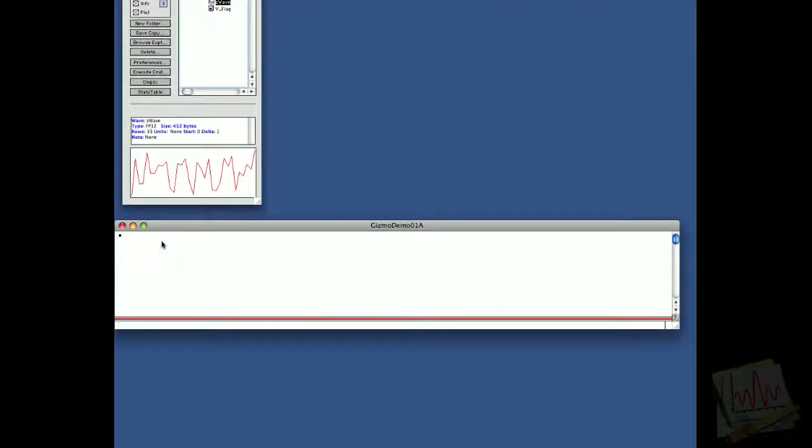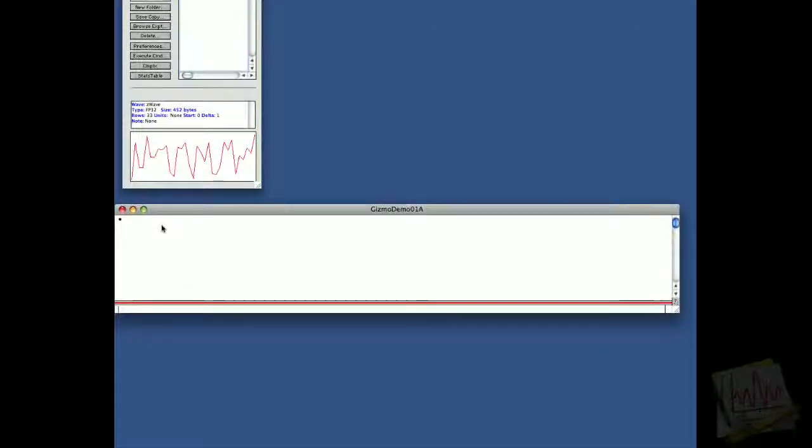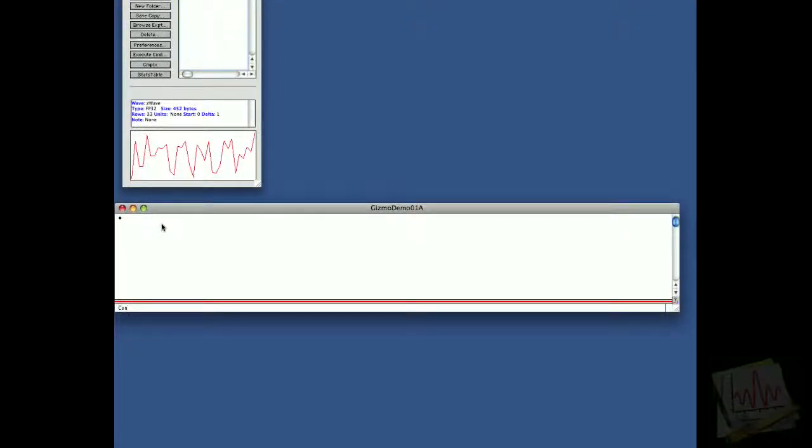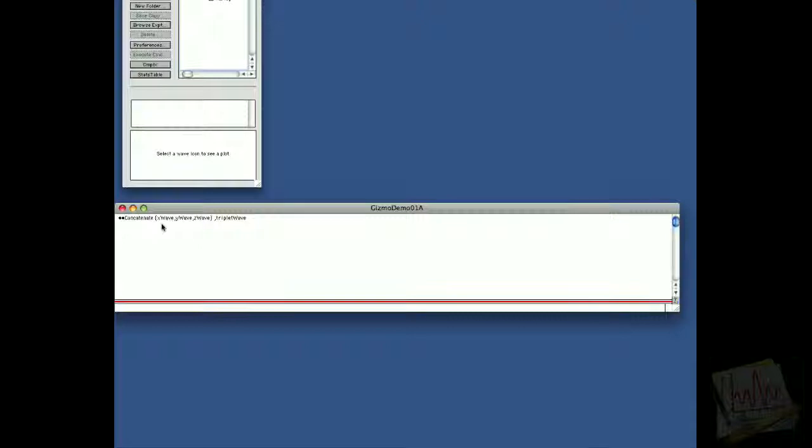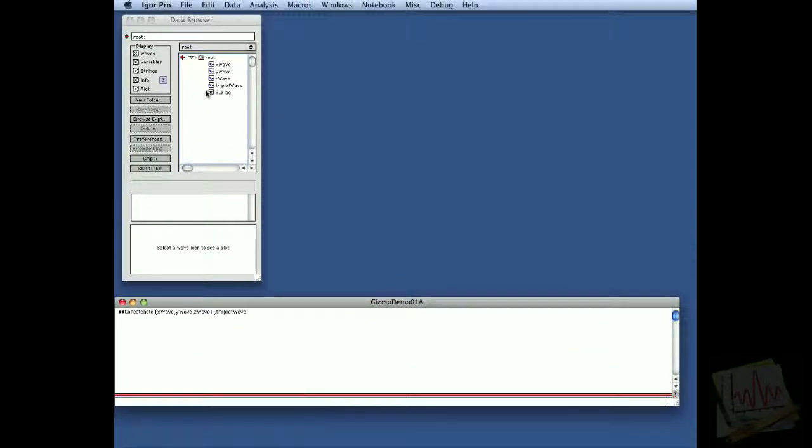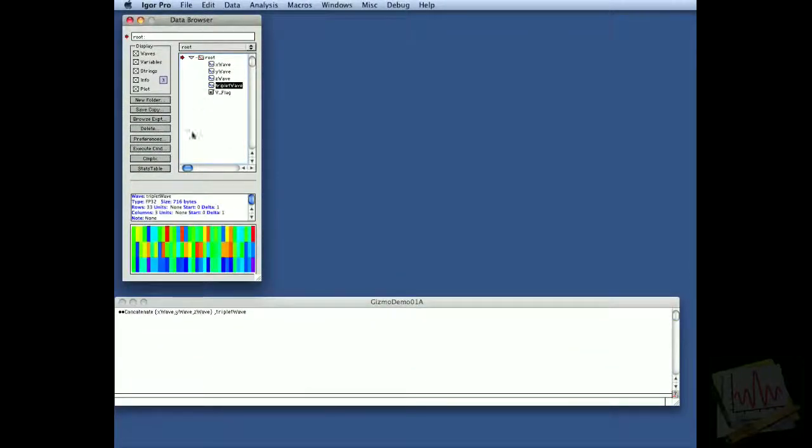We'll combine them using the command line. The command is concatenate x-wave, y-wave, z-wave into triplet. We can look at the Data Browser here and we see the triplet wave has indeed 33 rows by three columns.